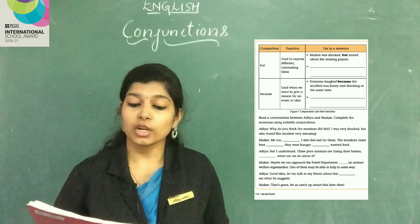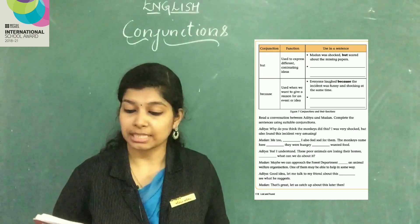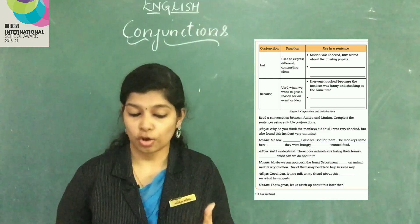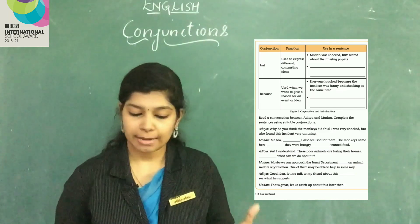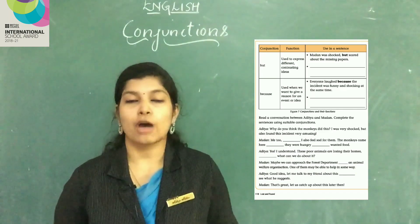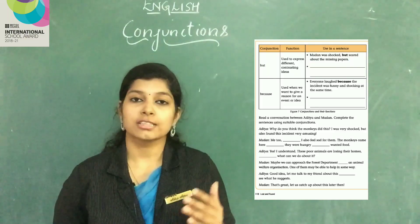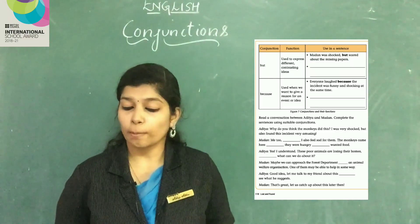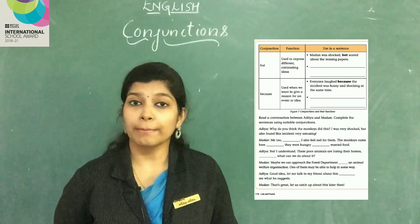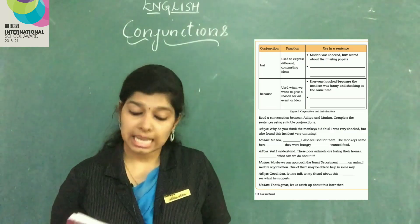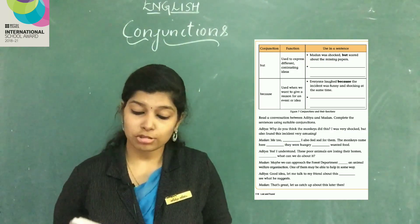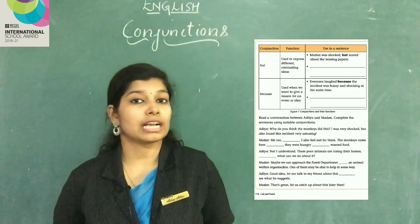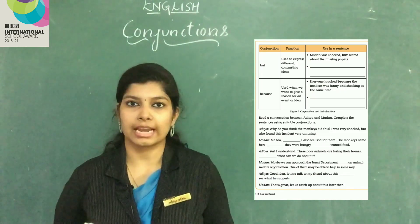Here, read a conversation between Aditya and Madan. Complete the sentences using suitable conjunctions. Let's start. Why do you think Gopal was able to steal your papers? Madan says: I think he was able to steal them because I was careless. So the answer is 'because I was careless.'